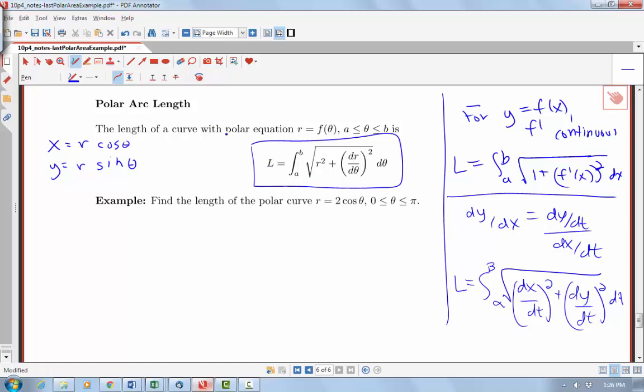So here we're stating the polar equation arc length formula as an integral from a to b, where those are our theta bounds, of the square root of r squared, the function itself squared, plus dr d theta, the derivative of r with respect to theta, squared d theta. So we can use this formula to calculate the arc length of some curve on an interval. So we'll just go ahead and apply the formula here.